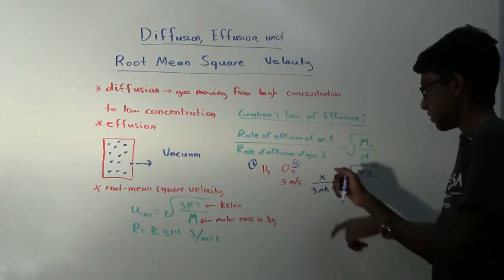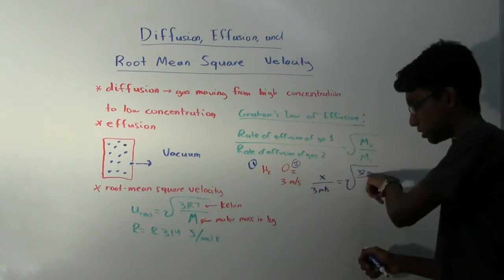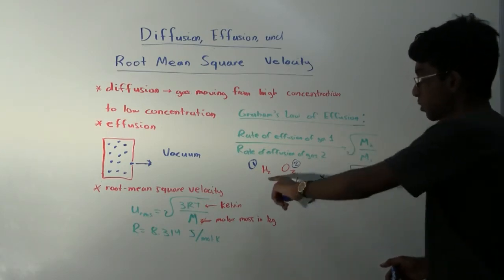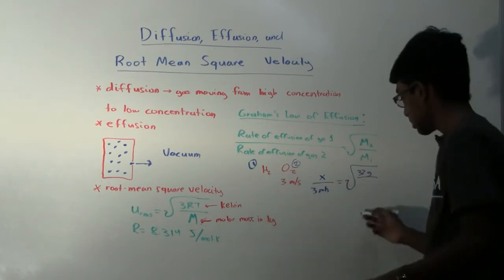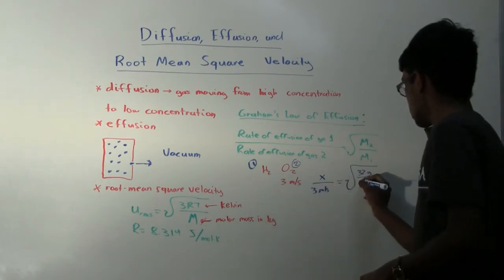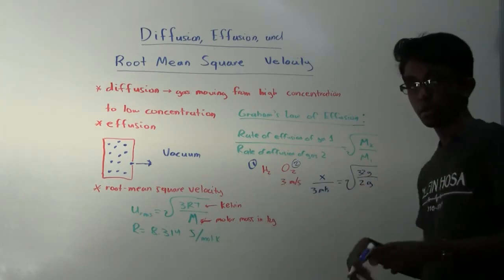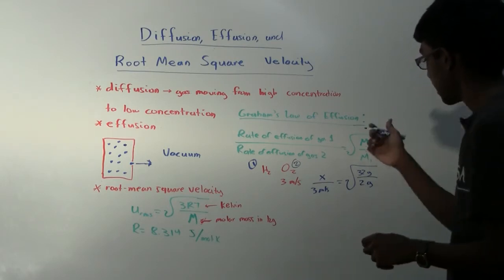So molar mass of gas 2, which is oxygen, that's 32 grams from the periodic table. The molar mass of hydrogen is 2 grams, about 2 grams, from the periodic table. And now we can just solve.